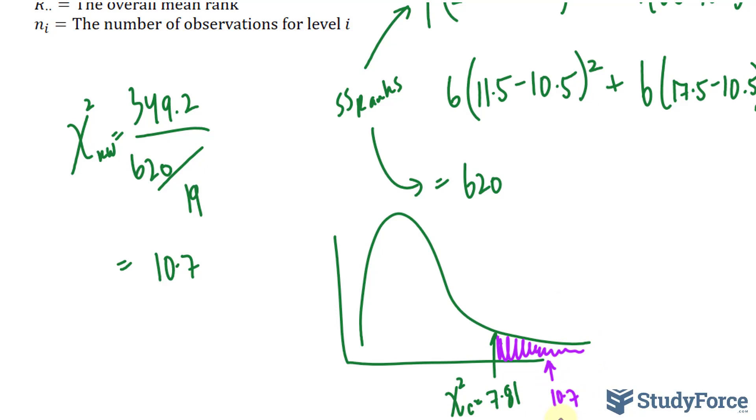This means that we have to reject the null hypothesis that all treatments are the same. So, based on the Kruskal-Wallis test, we have sufficient evidence at 0.05 significance level to conclude at least two treatment mean symptom scores differ.